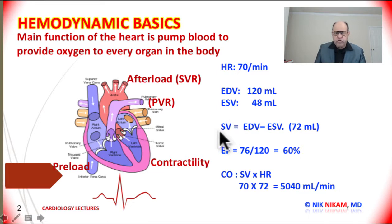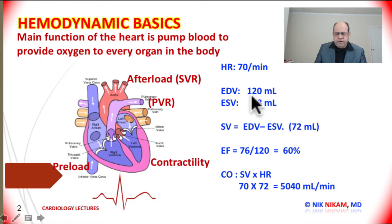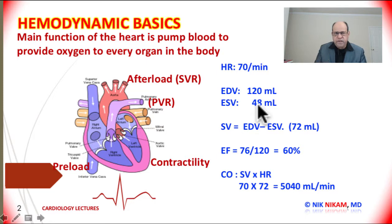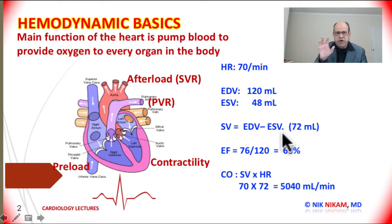The stroke volume is equal to end diastolic volume minus end systolic volume. If the end diastolic volume is 120 ml and the remaining blood after the ventricle squeezes is 48 ml, we have a stroke volume of 72 ml. That is, with each heartbeat the ventricle is squeezing 72 ml of blood into the aorta for distribution to the rest of the body.